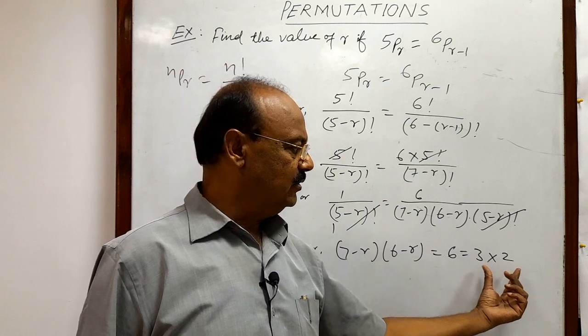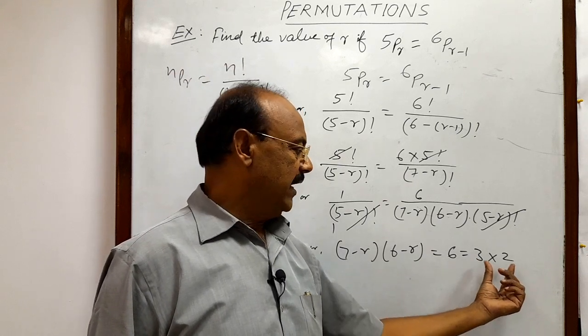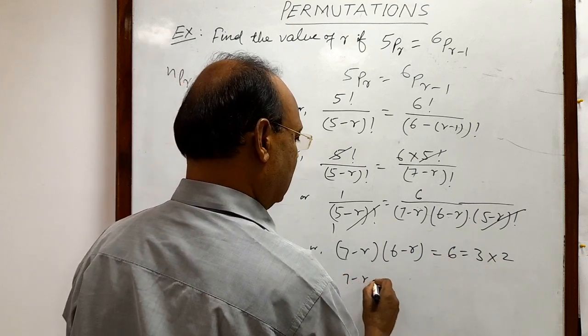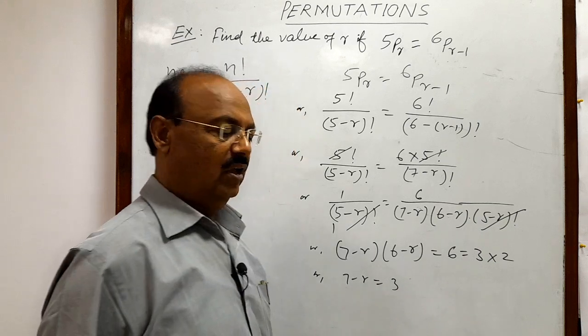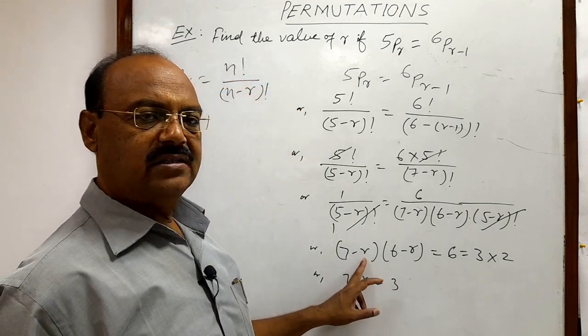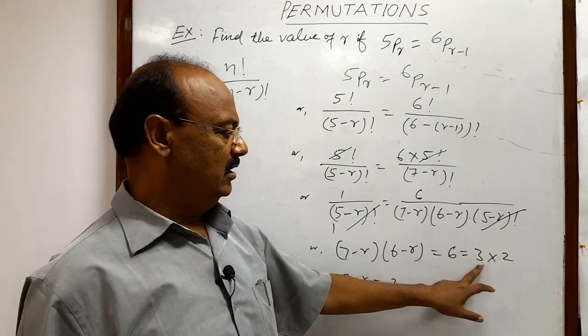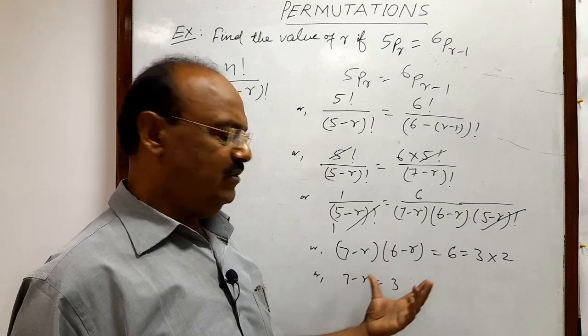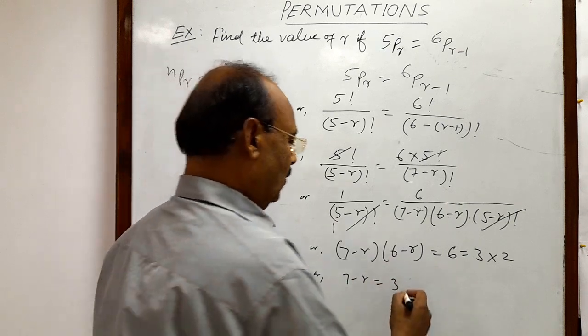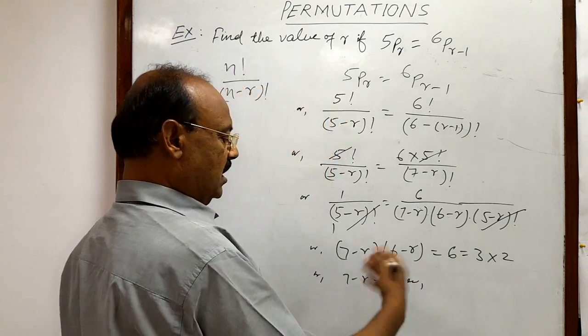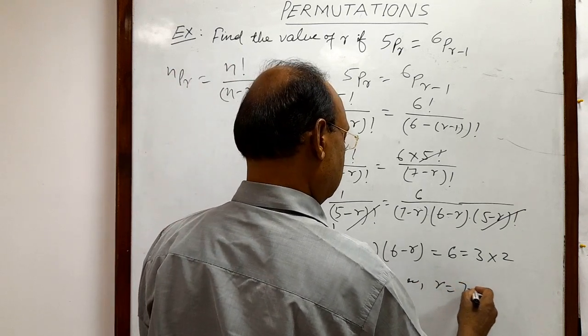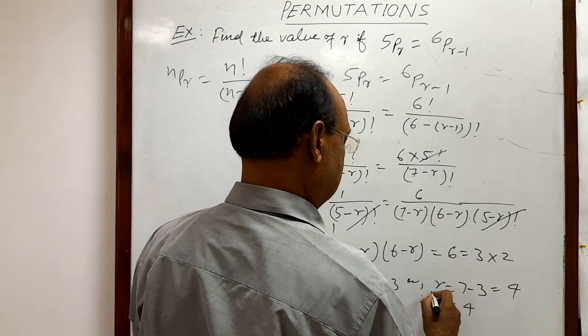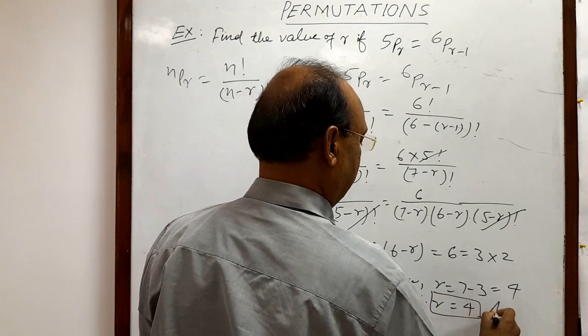The same thing is here also: 3 and 2 are two consecutive integers. So by comparing these two sides, we can write here that 7 minus r is equal to 3. We will not take 2 here because 7 minus r is greater than 6 minus r, so we are taking the greater value 3 here. So we can solve this expression very easily. We will get here by transposing r to another side: r is equal to 7 minus 3. This is equal to 4. Therefore, we are getting the value of r, which is 4, and this is the answer.